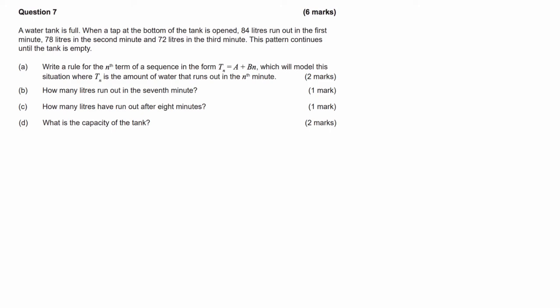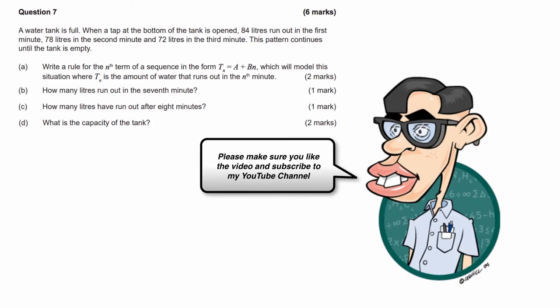G'day guys, we've got an exam question here today on sequences and series. The question is about a water tank that is full and when a tap at the bottom of the tank is opened, we've got 84 litres running out in the first minute, 78 litres in the second minute, 72 in the third, and the pattern continues until the tank is empty.